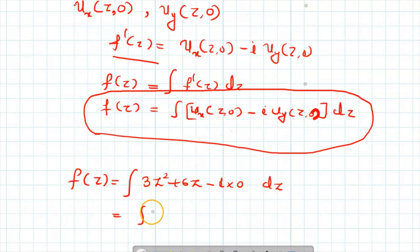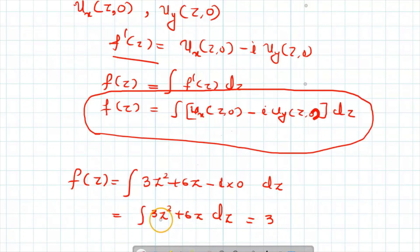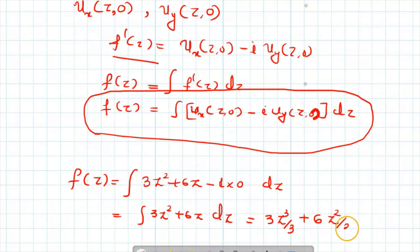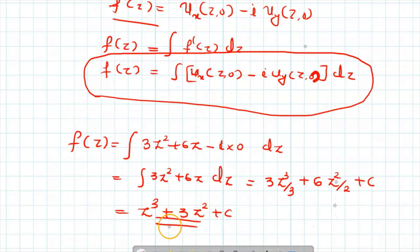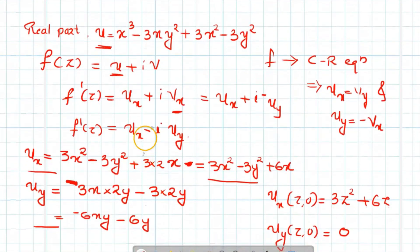So f of z equals the integral of [3z square plus 6z minus i times 0] dz, that is the integral of 3z square plus 6z dz. Integrating: 3z square integrates to z cube, and 6z integrates to 6 times z square by 2, giving 3z square, plus the constant of integration c. Therefore f of z equals z cube plus 3z square plus c. This is the analytic function whose real part is u equal to x cube minus 3xy square plus 3x square minus 3y square.